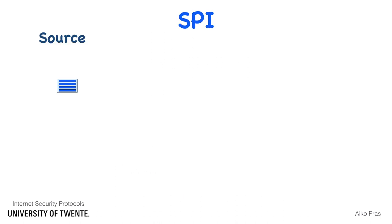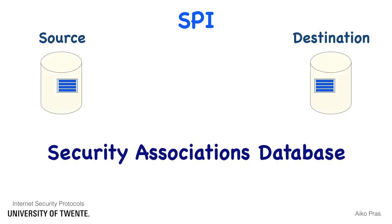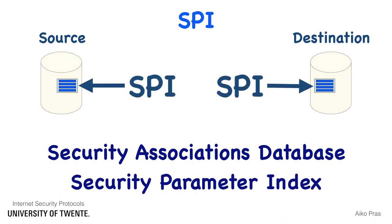The parameters are stored by source and destination in the so-called security associations databases, together with the remote IP address and the kind of IPSec protocol, thus AH or ESP. The security parameter index, abbreviated as SPI, points to this set of database values.